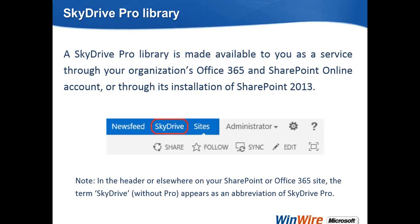A SkyDrive Pro library is made available to you as a service through your organization's Office 365 and SharePoint Online account or through its installation of SharePoint. You can organize and store work documents or other files in your personal SkyDrive Pro library. From there, you can easily share files and collaborate on documents with co-workers in your company. If you're on Office 365, you may also be able to share documents with partners outside of the organization.